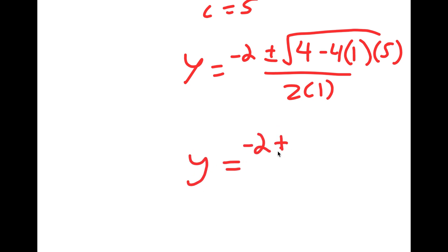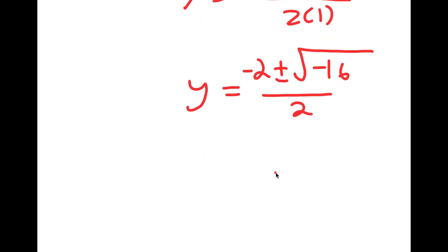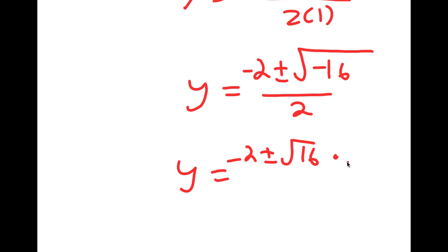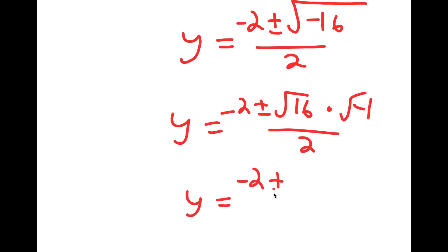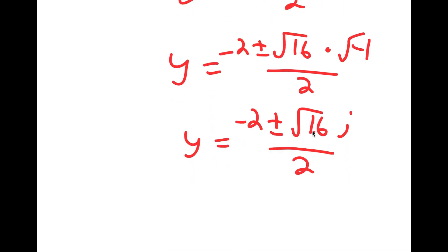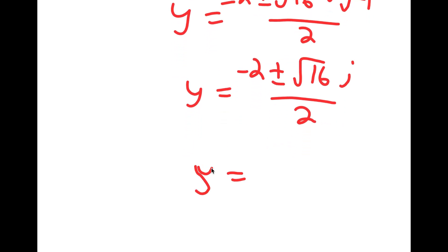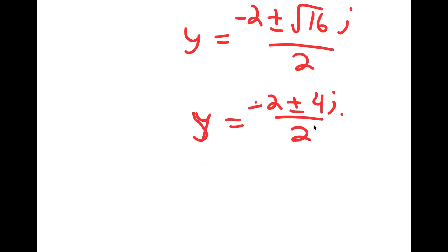This is equal to negative 2 plus or minus the square root of 4 minus 20, which is negative 16, over 2. I can write this as negative 2 plus or minus the square root of 16 times the square root of negative 1 over 2, which equals negative 2 plus or minus the square root of 16 times i, since the square root of negative 1 is i. The square root of 16 is 4, so y equals negative 2 plus or minus 4i over 2. Dividing both terms by 2, I get y equals negative 1 plus or minus 2i.